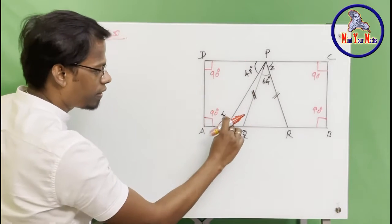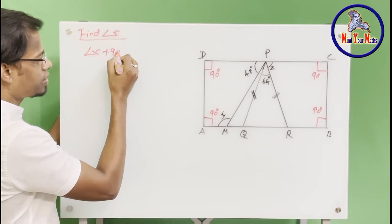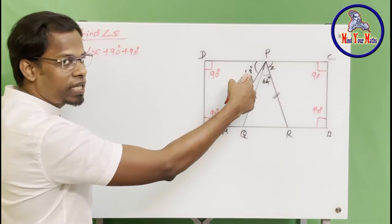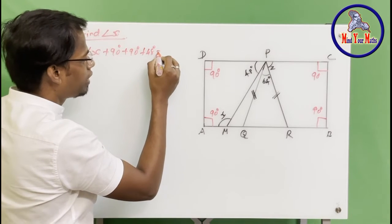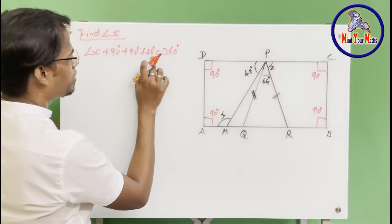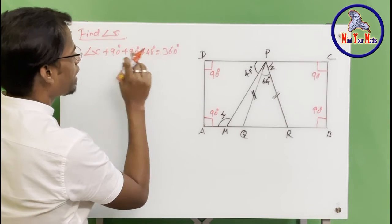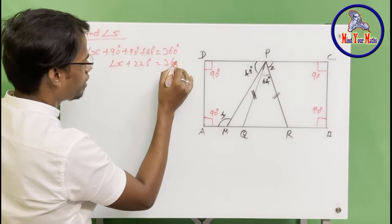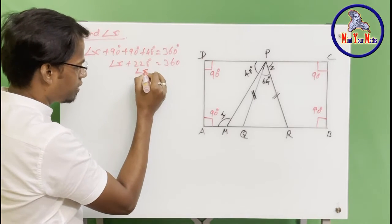So we can rewrite the equation: angle x plus 90 degrees plus another 90 plus 48 degrees — which is already given in the problem — equals 360 degrees. Adding the known values: 90 plus 90 is 180, plus 48 is 228. So angle x plus 228 equals 360.